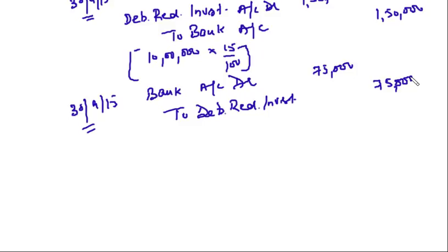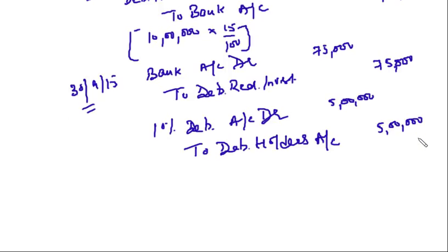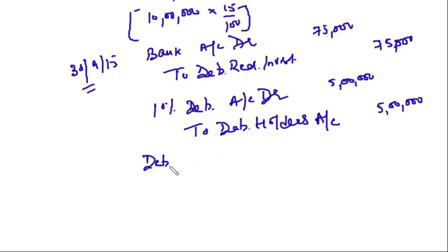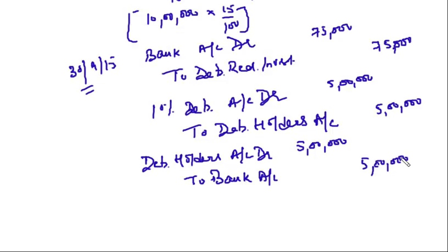Just before redemption on 30th September, encash investments: Bank Account Dr. to Debenture Redemption Investment Account — Rs. 75,000. Then to redeem debentures: 10% Debentures Account Dr. to Debenture Holders Account — Rs. 5 lakh. Then to pay the debenture holders: Debenture Holders Account Dr. to Bank Account — Rs. 5 lakh.